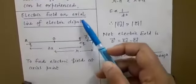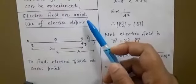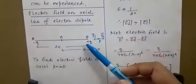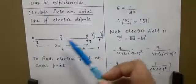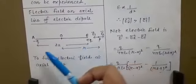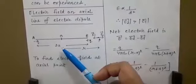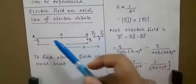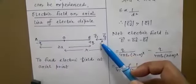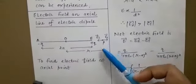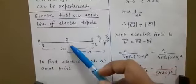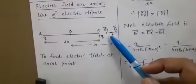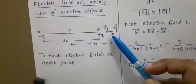First of all, what is an axial line? As we know axis, the axial line means a line that is lying on the line joining the two charges. Consider the two charges forming an electric dipole separated by a distance 2a. We have to find the electric field at the axial line, or at any point on its axis. We will consider a point P lying on its axis.